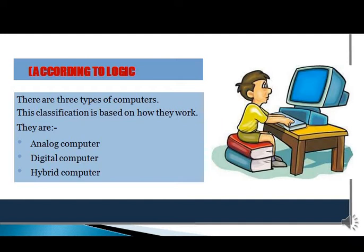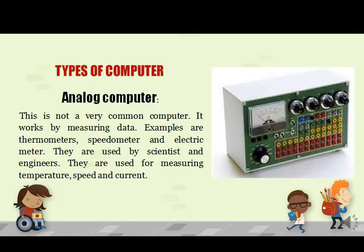According to logic, computers are classified into three parts: analog computer, digital computer, and hybrid computer. Analog computer is not a common computer. It is generally used to measure data — for example, thermometers, speedometer, and electric meter. This computer is generally used in the scientific field and shows results in the form of images or graphs. We can measure data of temperature, speed, and current using an analog computer.